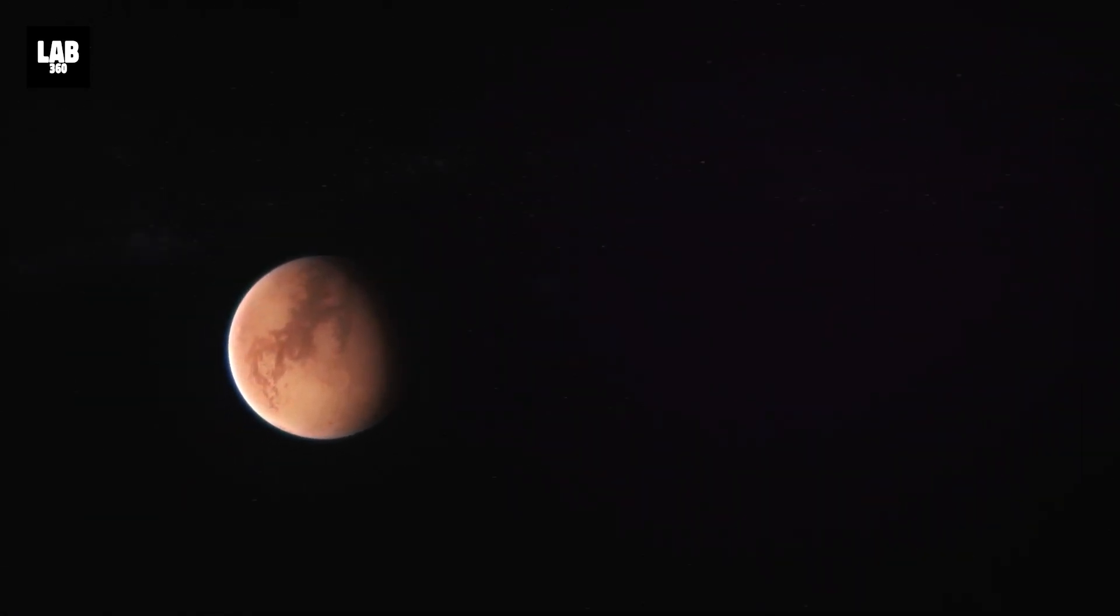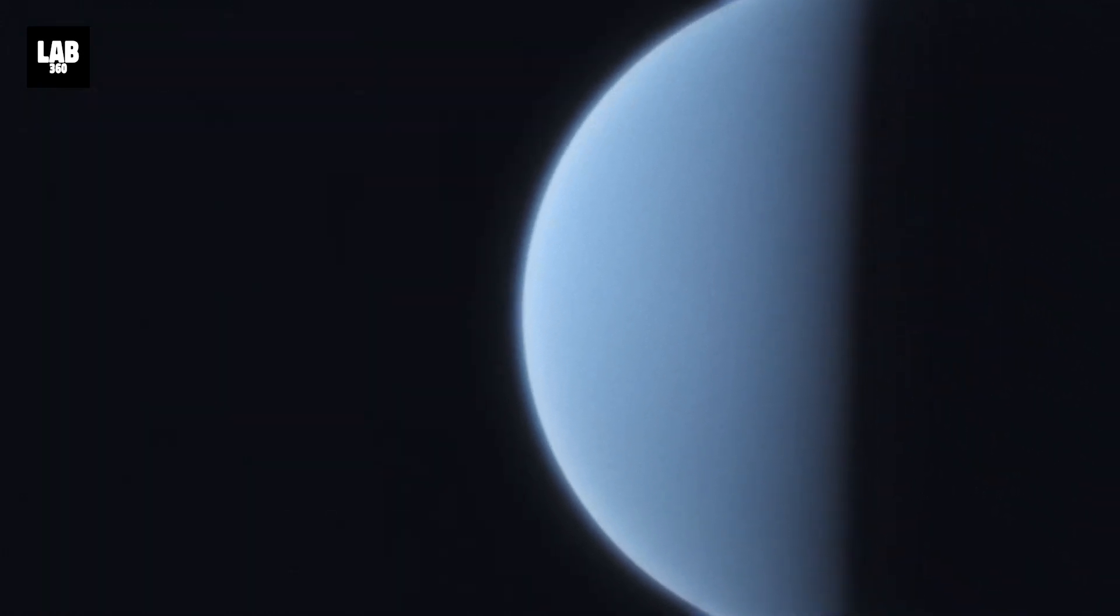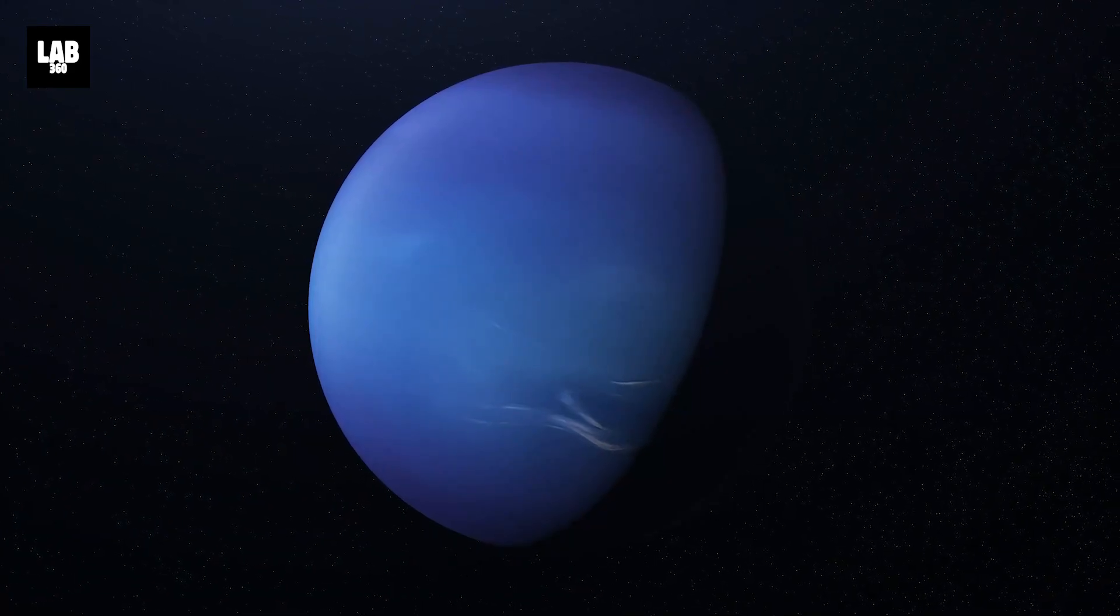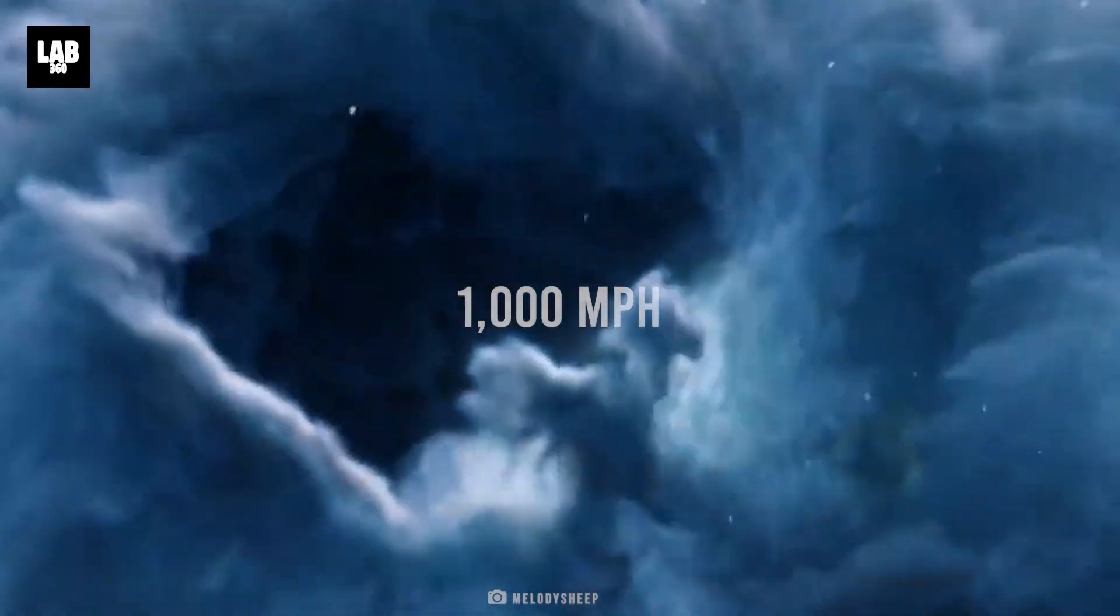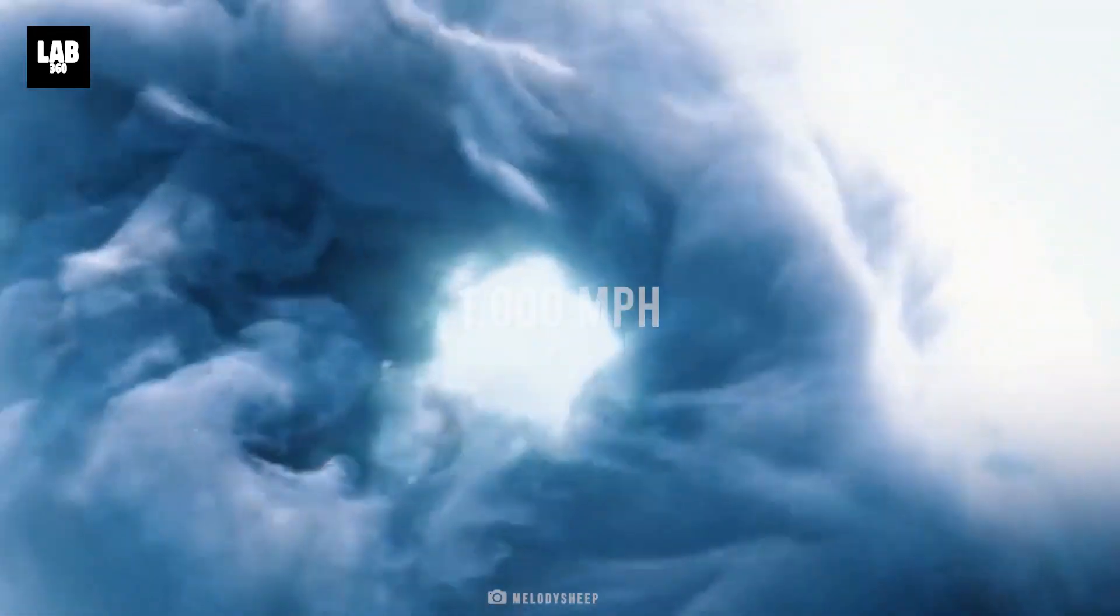Voyager 1's path took it close to Saturn's moon Titan, which is cloaked in an orange, hazy atmosphere. Voyager 2, on the other hand, made a historic flyby of Uranus, where it discovered 10 previously unknown moons. During its encounter with Neptune, Voyager 2 recorded wind speeds of up to 1,000 miles per hour, making it the fastest wind ever recorded on a planet in our solar system.